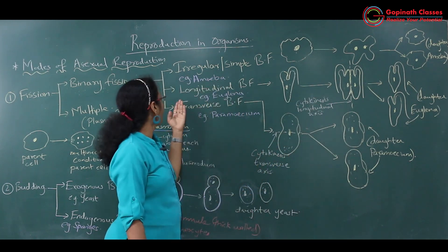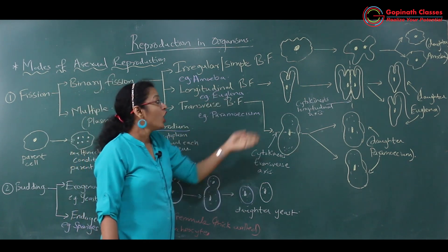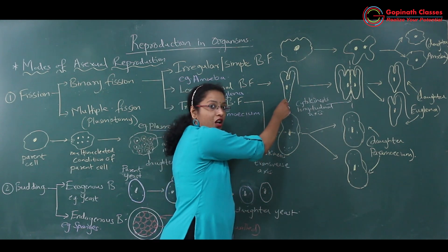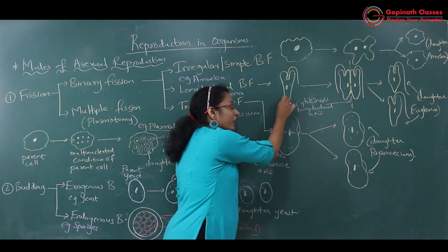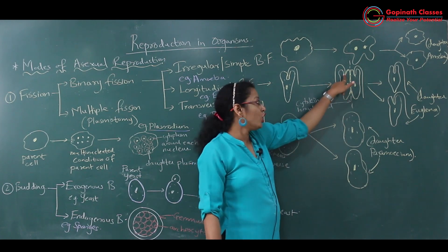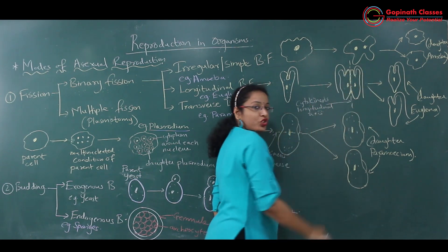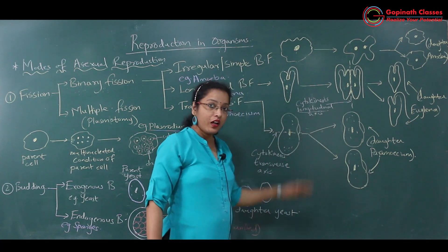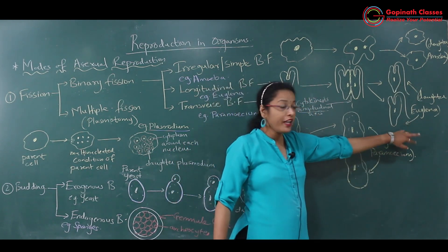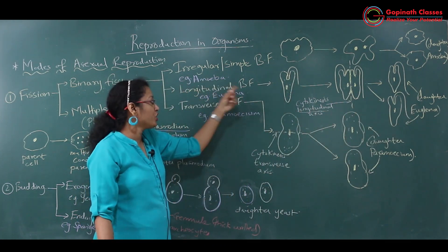The second type of binary fission is longitudinal binary fission. In longitudinal binary fission, cytokinesis takes place longitudinally. Look here — this is the parent euglena which has its own nucleus and cytoplasm. When euglena undergoes longitudinal binary fission, firstly there will be karyokinesis followed by cytokinesis, and the cytoplasm divides longitudinally along the longitudinal axis, giving two daughter euglenae.